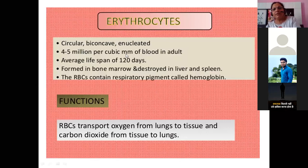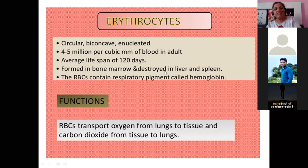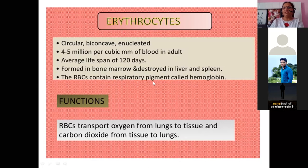RBC count is 4.5 to 5.5 million — that is the normal limit. The lifespan is 120 days. RBCs are formed in the bone marrow and destroyed in the liver and spleen. RBCs contain the respiratory pigment called hemoglobin. If hemoglobin is low, the body will be weak and lack energy.